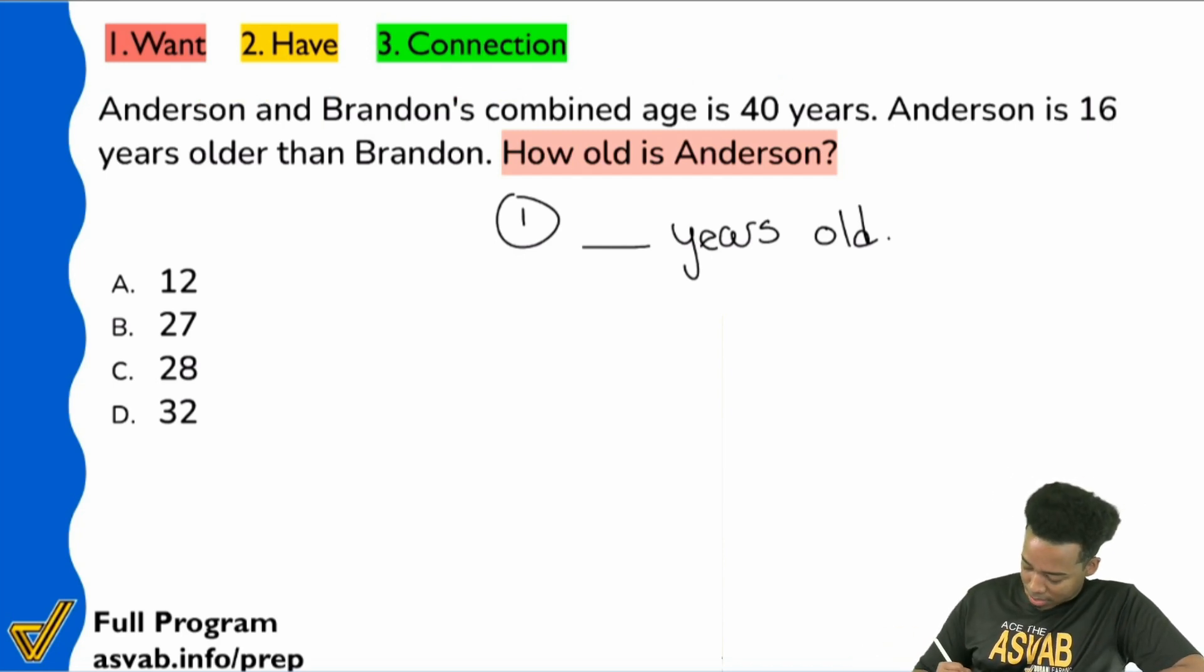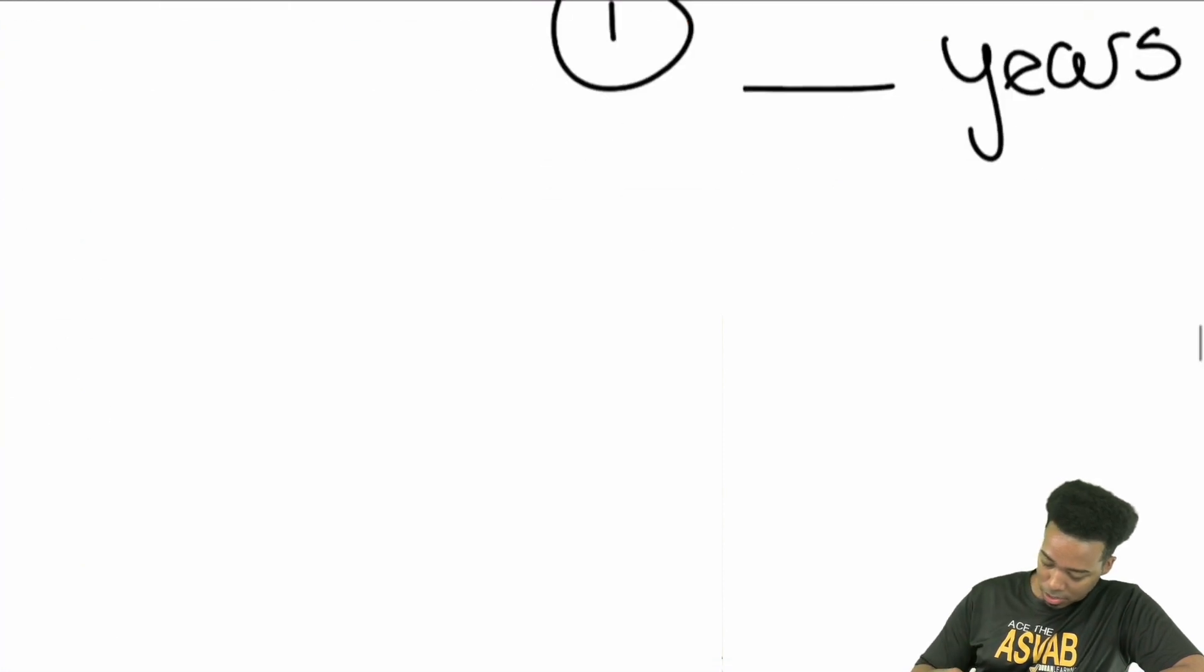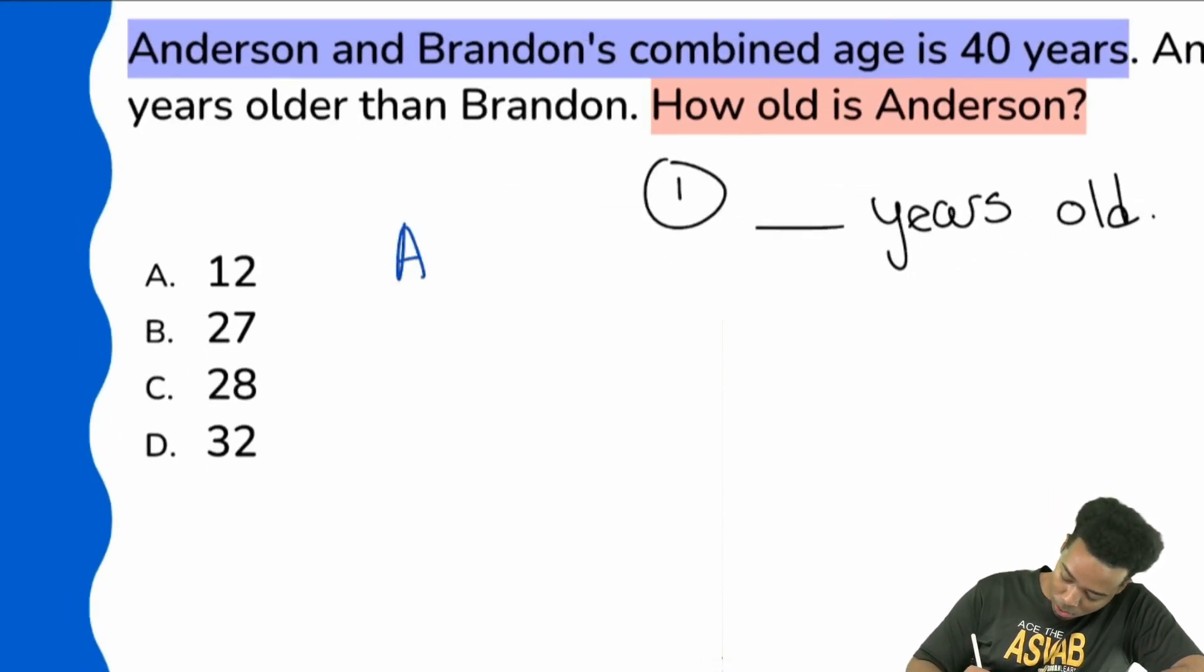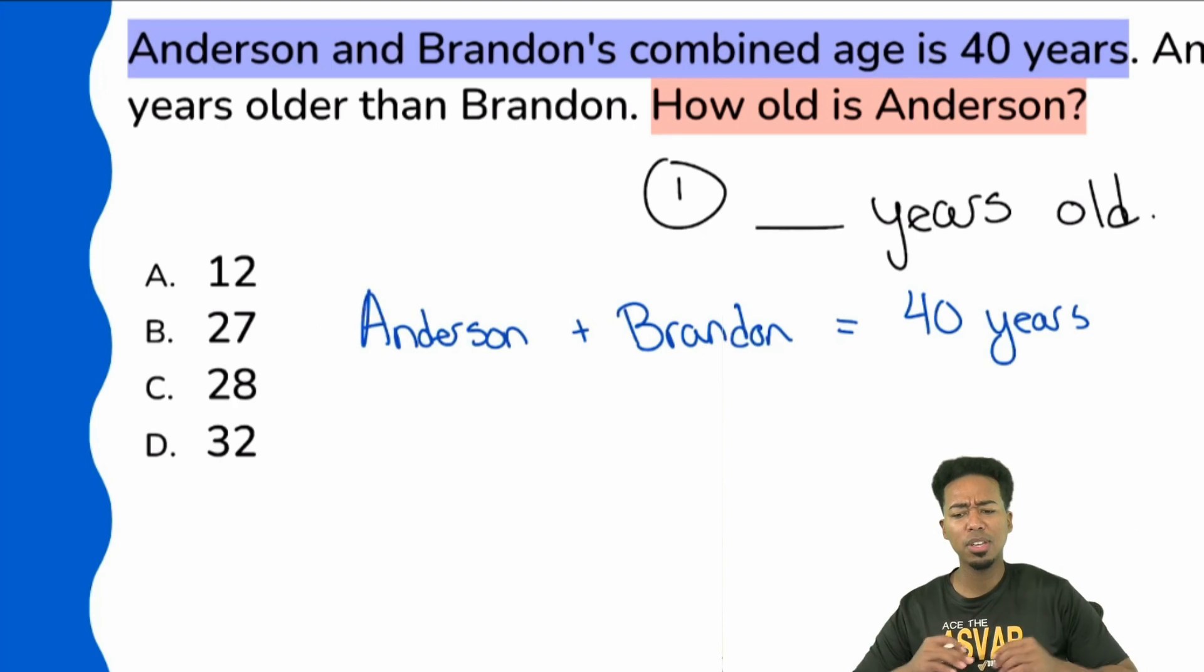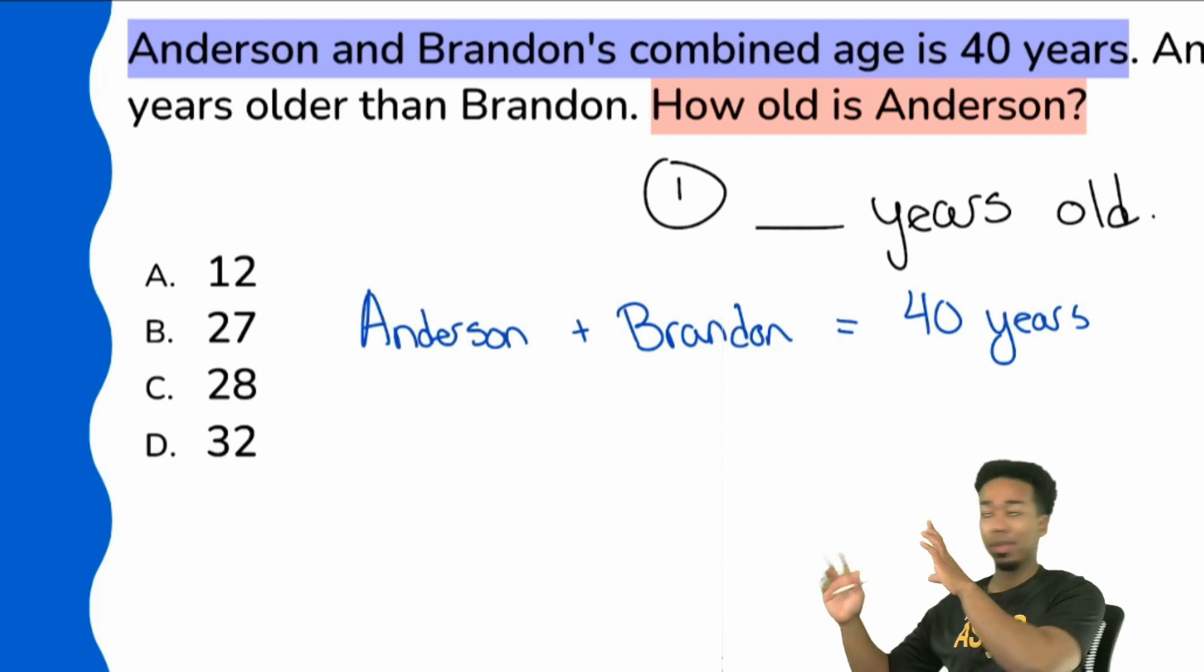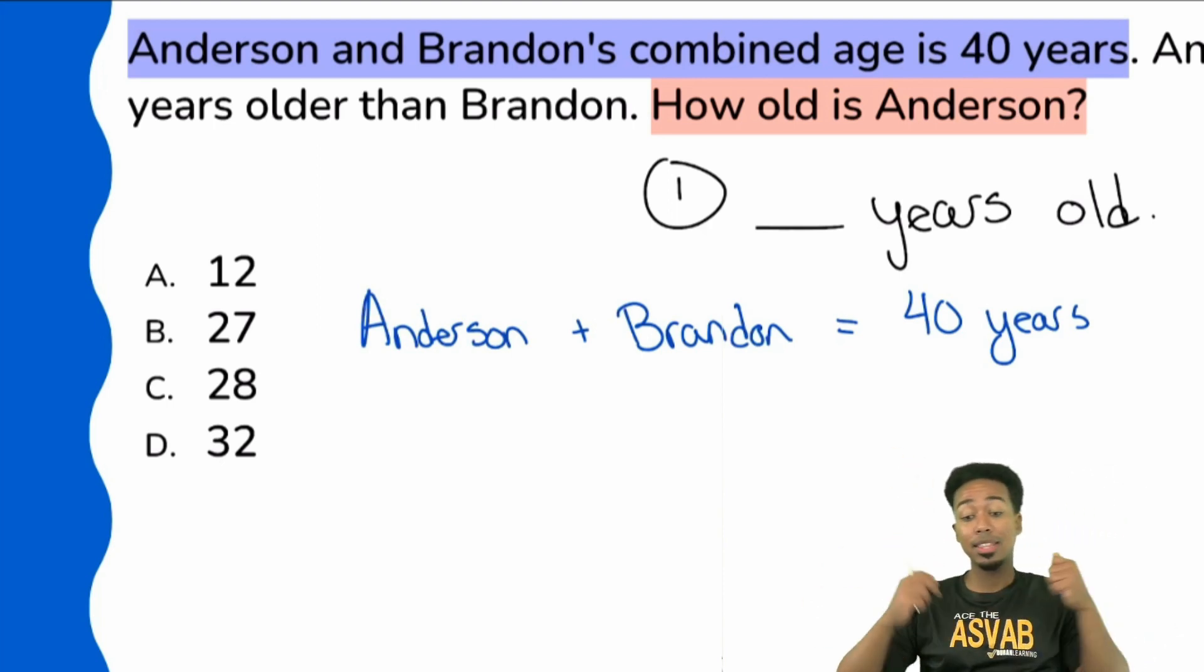Everybody, wouldn't that mean that if I wrote that down here, Anderson and Brandon's combined age is 40 years, wouldn't that mean that we would say Anderson plus Brandon equals 40 years. Isn't that what that means, everybody? Yes or no? In your opinion, isn't that what that means? Anderson and Brandon's combined age is 40 years. So that means that Anderson plus Brandon is 40 total, right? Like, even if you don't know systems of equations, I hope that you can see that sentence when they say combined age. That means add up the ages, that's 40. Hopefully that's not too much of a stretch for anybody here right now.